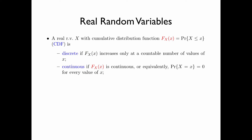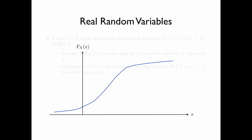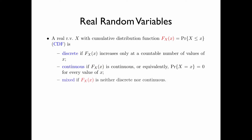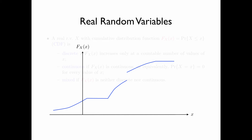The random variable is continuous if F(x) is continuous, or equivalently, the probability that x equals x is equal to 0 for every value of x. The random variable is mixed if F(x) is neither discrete nor continuous. The height of the step at a discontinuity represents the value of the probability mass at that particular x.